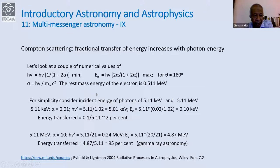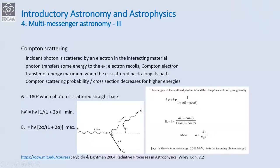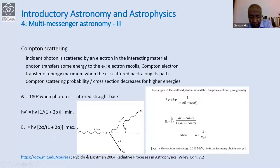H nu prime is minimum when cos θ = −1 (theta = 180°), which is when the Compton electron energy is maximum. More energy is transferred when the incoming photon has higher energy. For theta = 180°, one can calculate H nu prime and the electron energy accordingly.